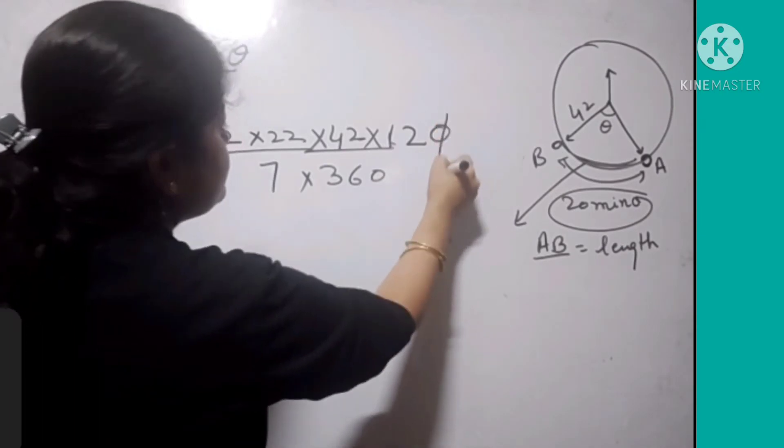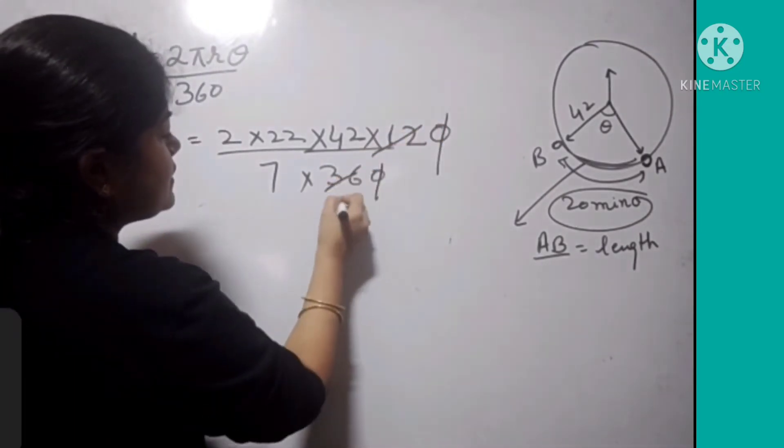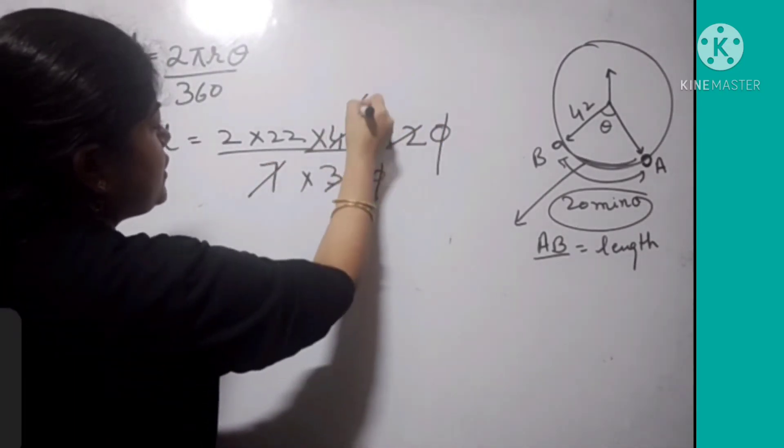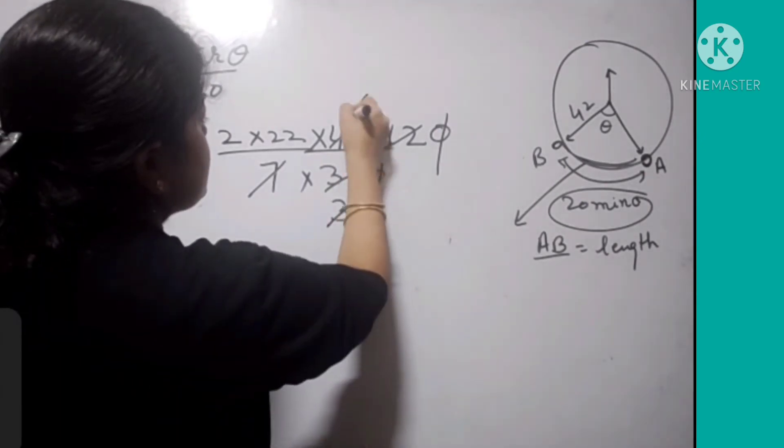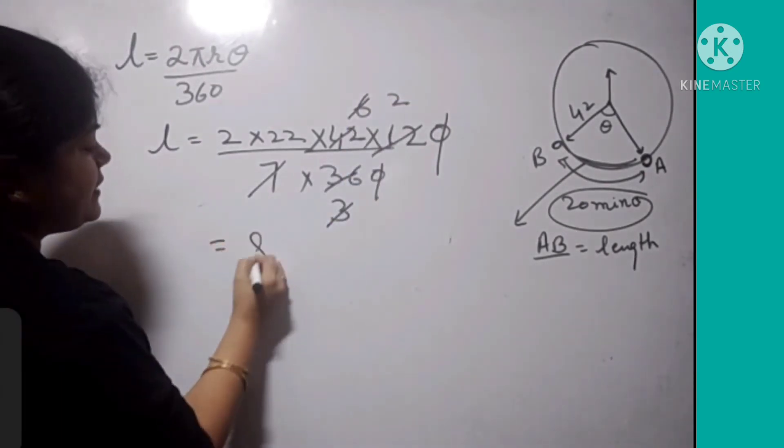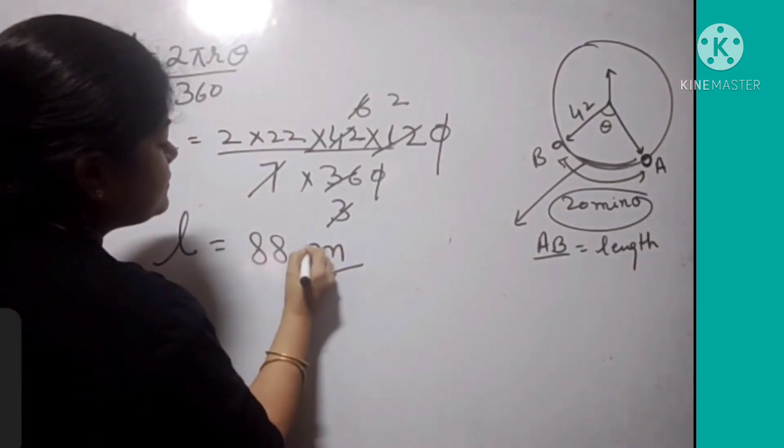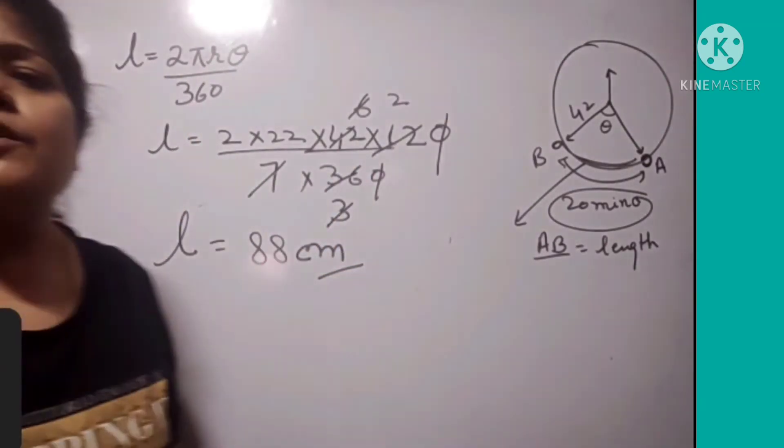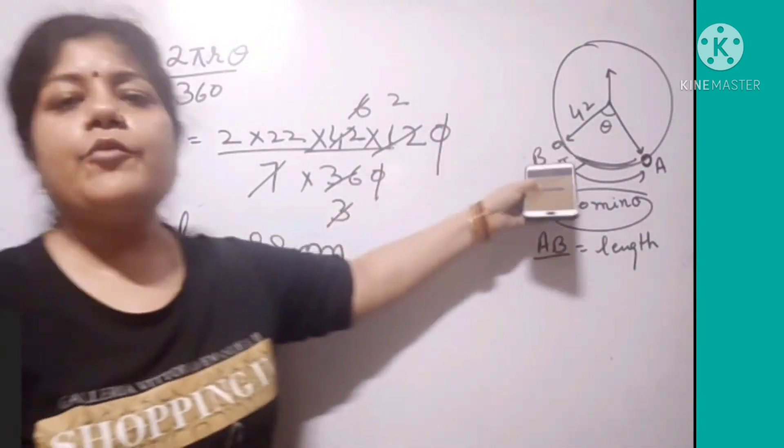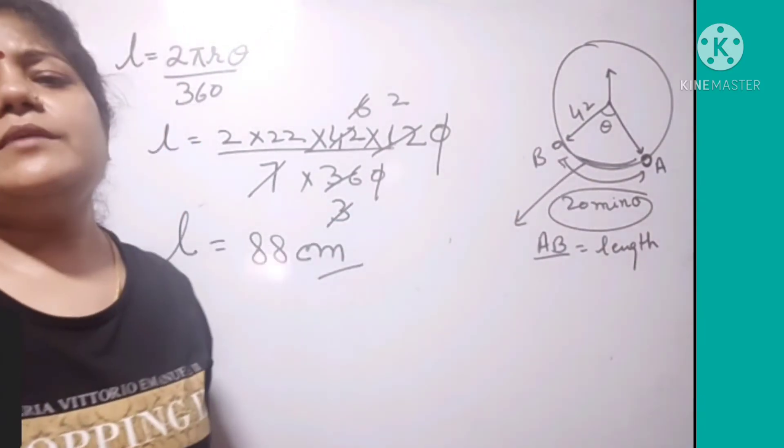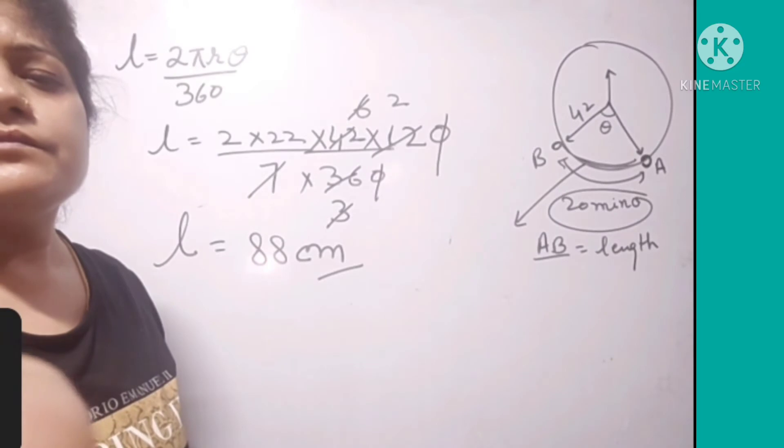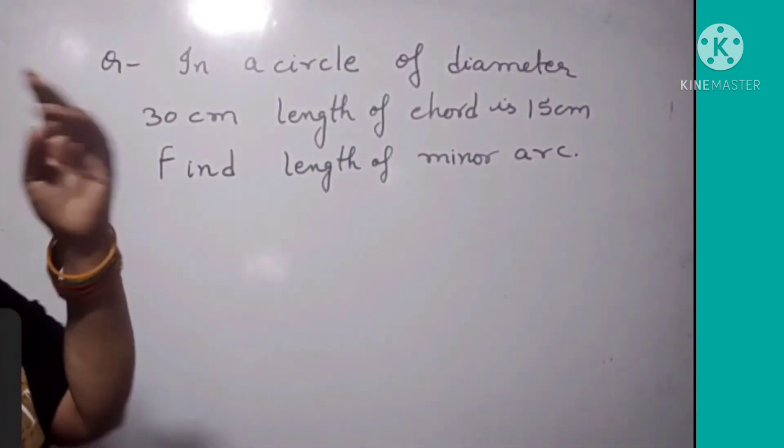What do we get? 2 times 22/7 times 42 times 120 upon 360. Now we easily sort: 3 into 36, 6 into 42, and we get 88 cm. So this is the distance covered by the clock in 20 minutes from moving one point to another.